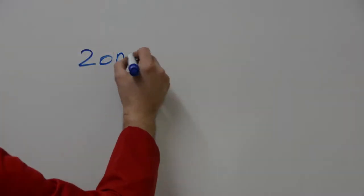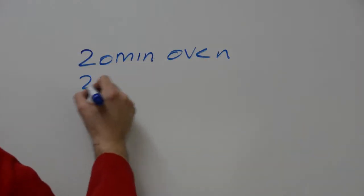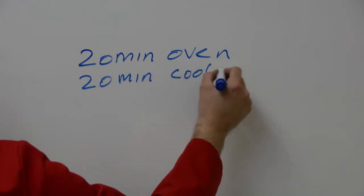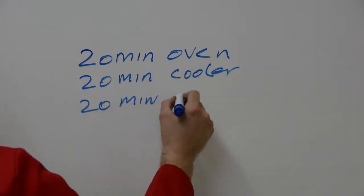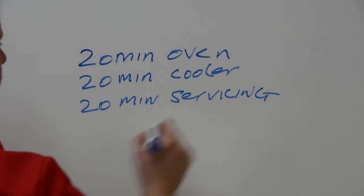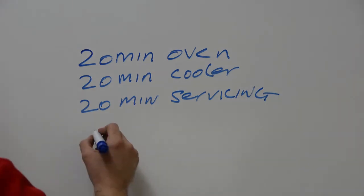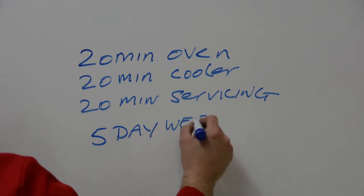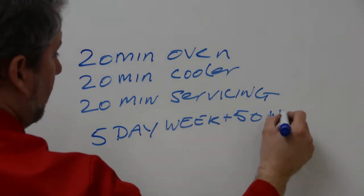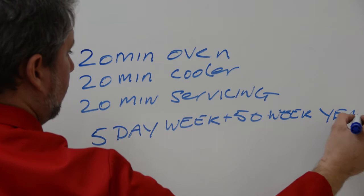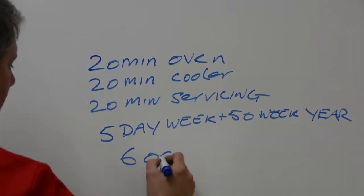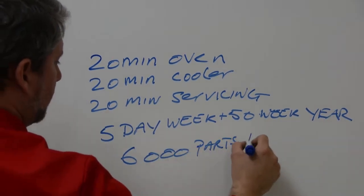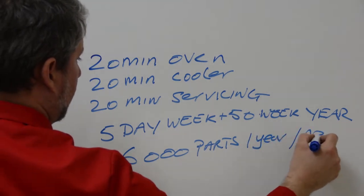Let's suppose you run a 20 minute oven, a 20 minute cooler, and a 20 minute servicing cycle on one arm of your machines. Let's suppose you run for 5 days per week, 50 weeks per year. That's going to give you 6,000 parts per year per arm.